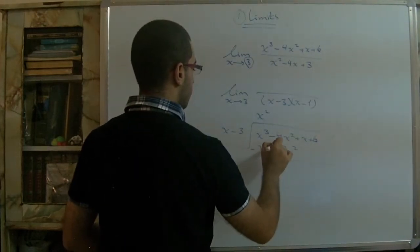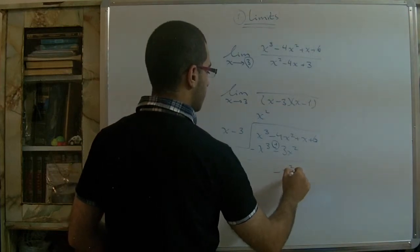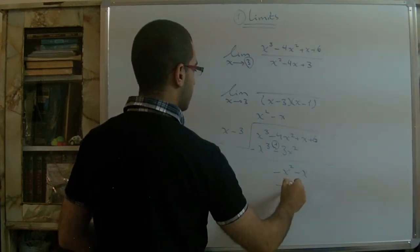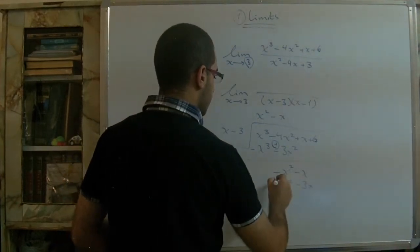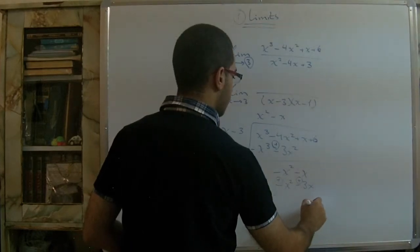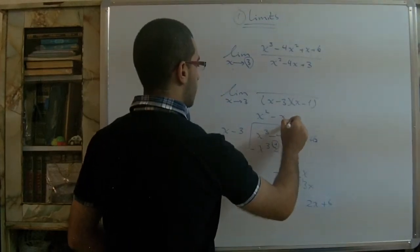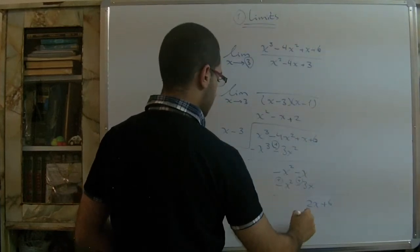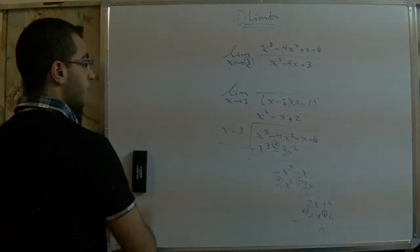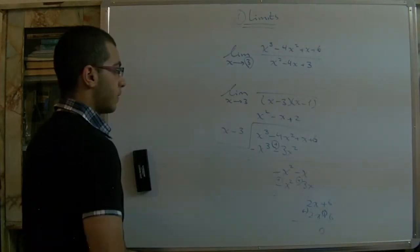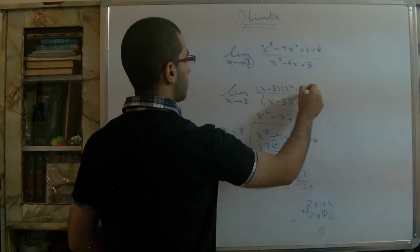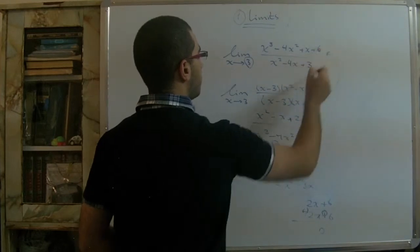Performing the long division: the first term is negative, combined with the positive term gives −x equal to −x. Then −x minus (−3x) yields 2x + 6. Dividing 2x + 6 gives remainder 0. So the expression factors as (x − 3)(x² − x + 2).